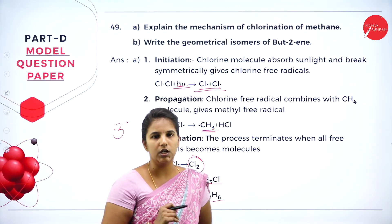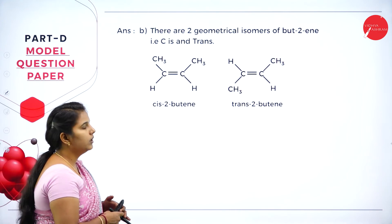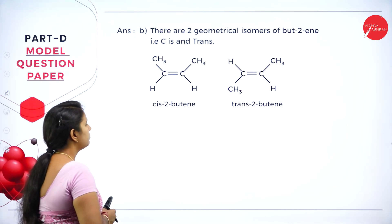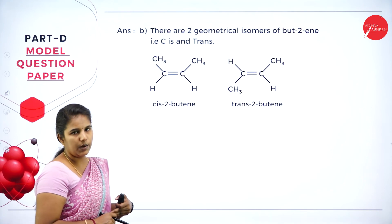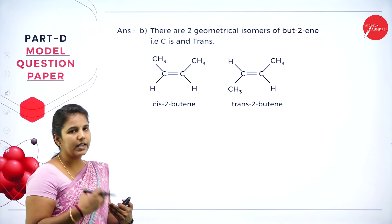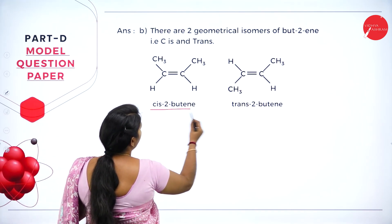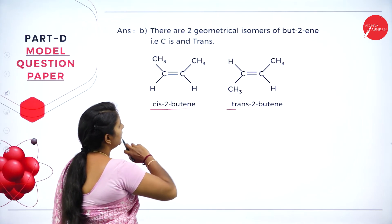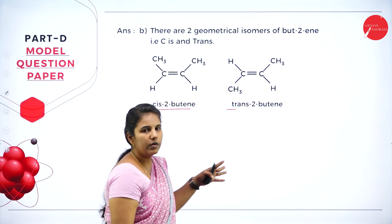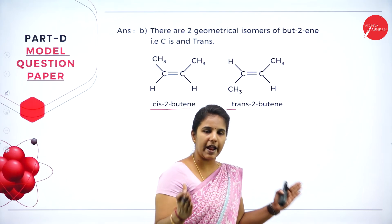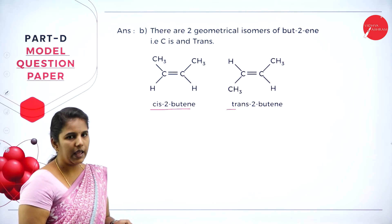For the second part, write the geometrical isomerism of 2-butene. But-2-ene has four carbon atoms with a double bond at the second carbon. There are two forms: cis-2-butene, where the two methyl groups are on the same side of the double bond, and trans-2-butene, where the two methyl groups are on opposite ends. You can write the cis and trans forms easily with the structural diagram.